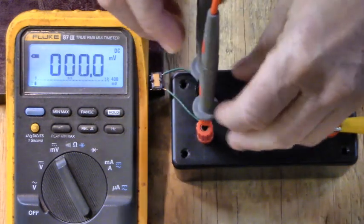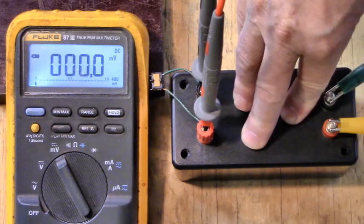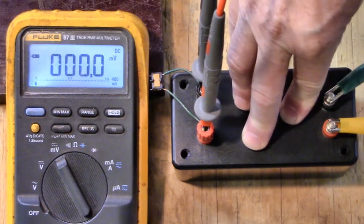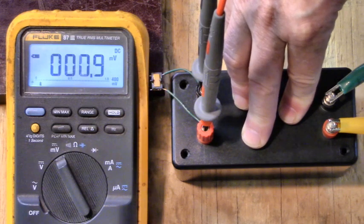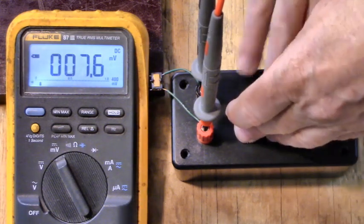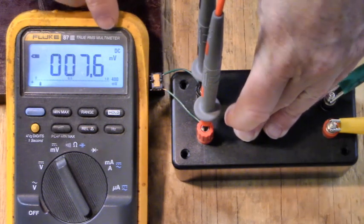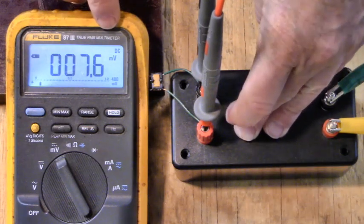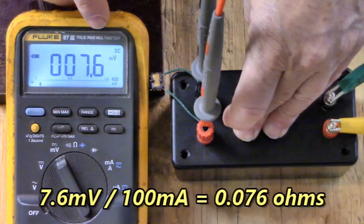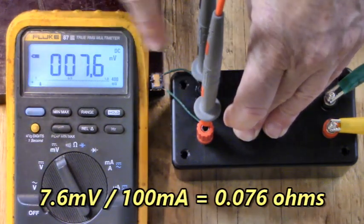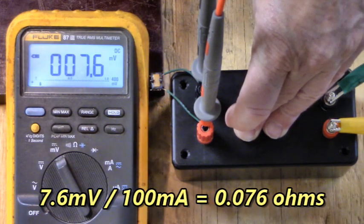Let's put our probes there so that we measure across that 0.07 ohm resistor. I'm going to apply 5 volts to the bridge rectifier. Now look at that, we have 7.6 millivolts across that resistor. And 7.6 millivolts divided by 100 milliamps through the resistor equals 0.076 ohms. Isn't that amazing?